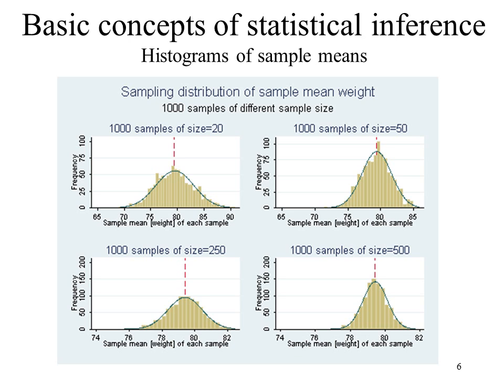Here's the graph. In the top left corner, you have 1,000 samples of size 20 — the sample means ranged anywhere from 70 to 90 kilograms. Then with 1,000 samples each of size 50, the spread of the sample mean weight ranges from about 73 to about 85. On the bottom, there are 1,000 samples of size 250 and 1,000 samples of size 500, both on the same scale. For size 250, the range was from 76 to 82, and for samples of size 500, the range was from just under 78 to about 82.